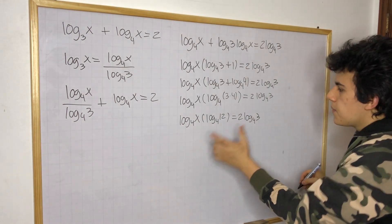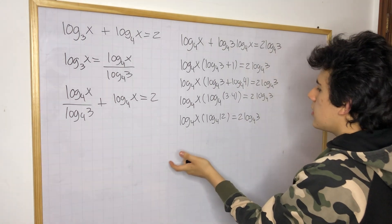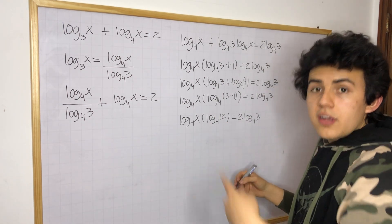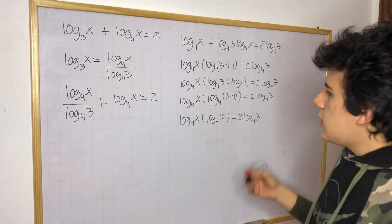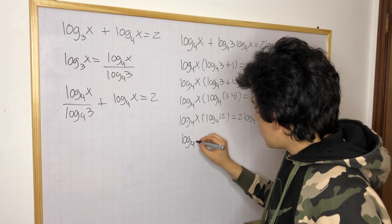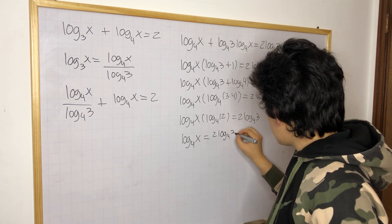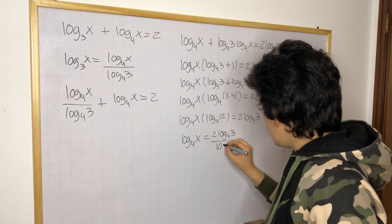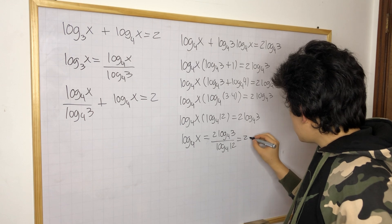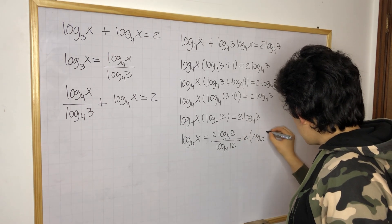Now we've gotten to this point. The only thing that we want to do now is — well, you can notice that x is basically alone. We can divide the equation by this number right there, and now we can transform the equation to exponential form. So we would get log base 4 of x is equal to 2 times log base 4 of 3 over log base 4 of 12. And now we can actually simplify this to 2 times log base 12 of 3.